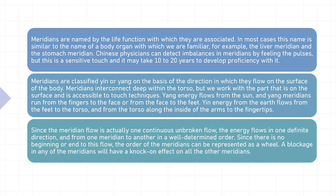Meridians are classified yin or yang on the basis of the direction in which they flow on the surface of the body. Meridians interconnect deep within the torso, but we work with the part that is on the surface and accessible to touch techniques. Yang energy flows from the sun, and yang meridians run from the fingers to the face or from the face to the feet. Yin energy from the earth flows from the feet to the torso and from the torso along the inside of the arms to the fingertips. Since the meridian flow is one continuous unbroken flow, the energy flows in one definite direction and from one meridian to another in a well-determined order. Since there is no beginning or end to this flow, the order of the meridians can be represented as a wheel.